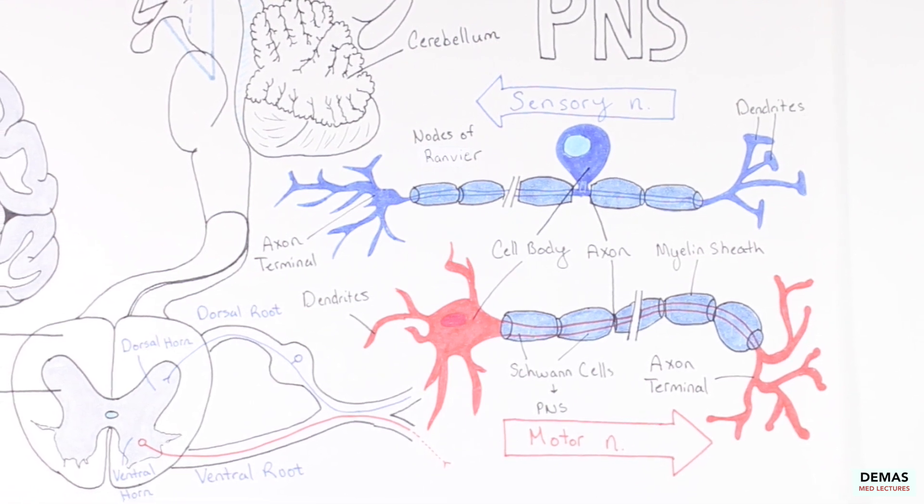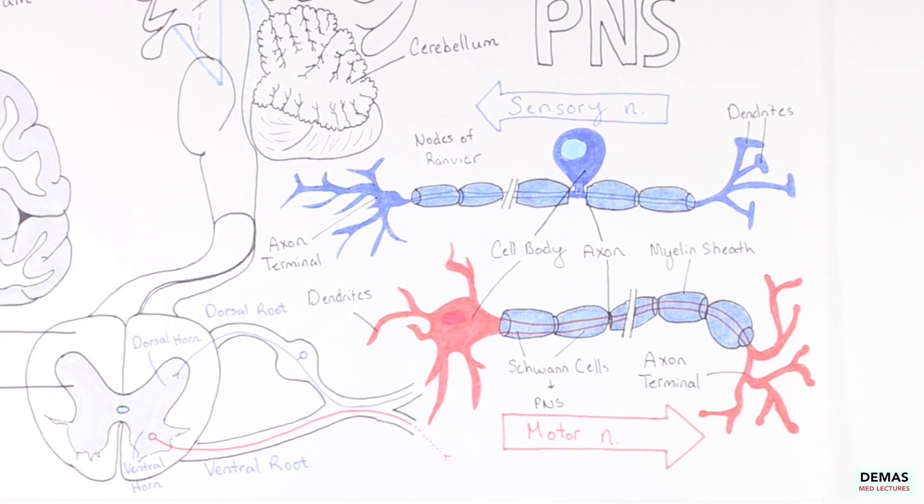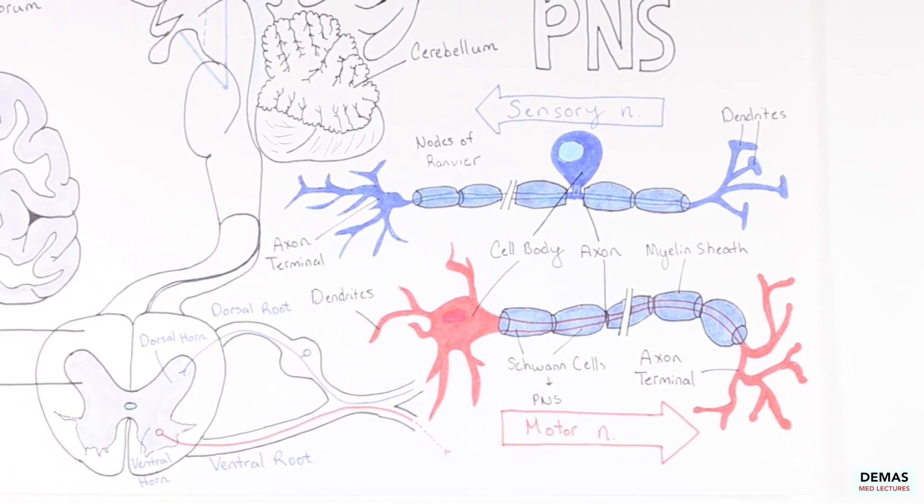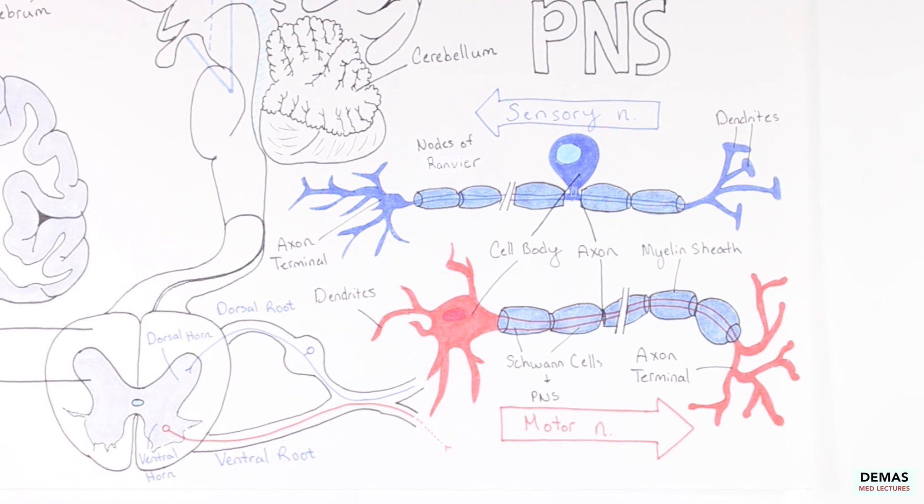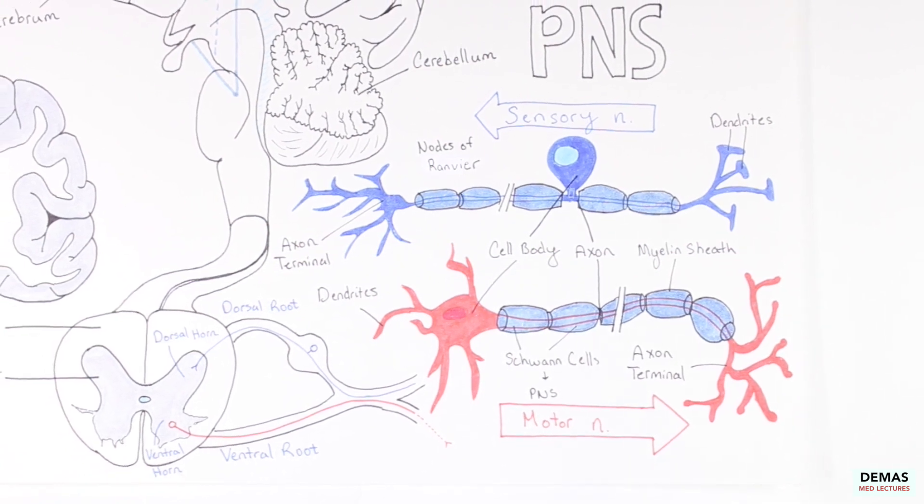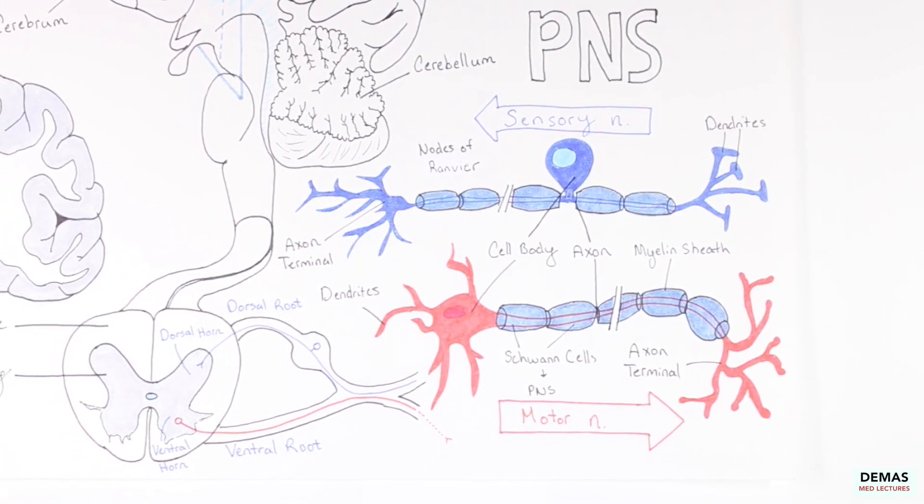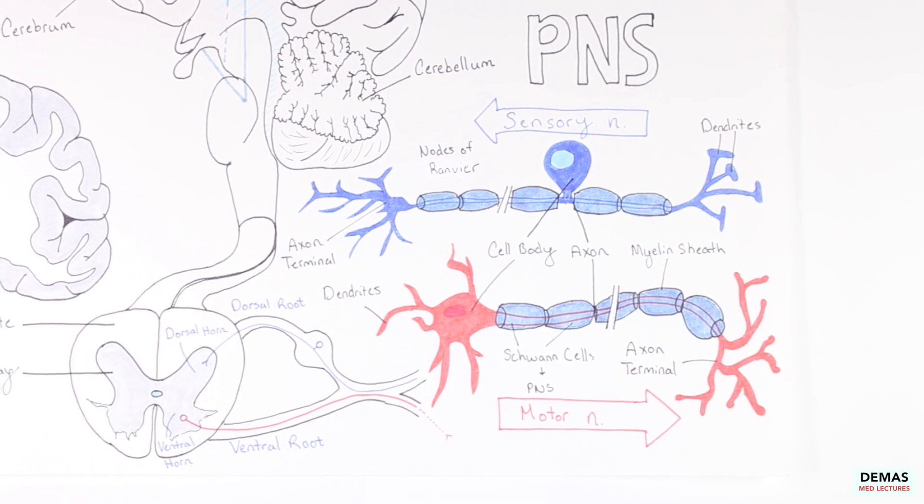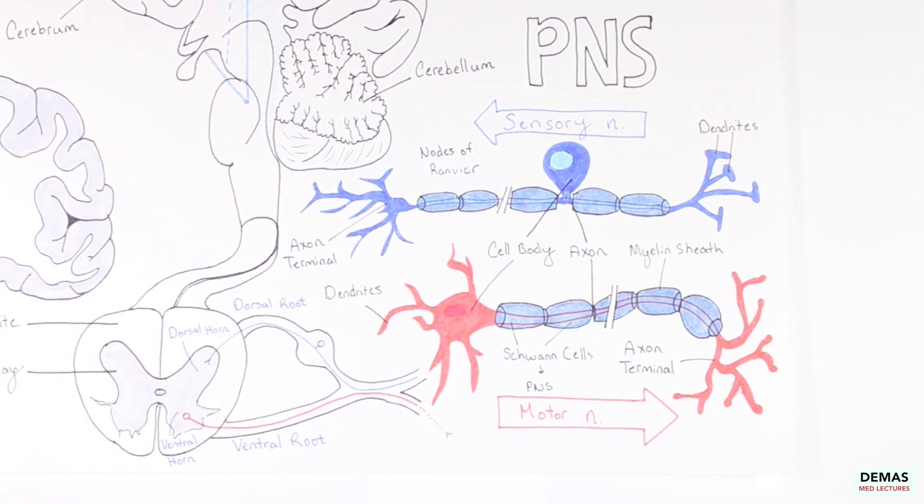For this reason, most of the neurons begin with their dendrites in the gray matter, and the nerve tracts, which contain axons, is what makes the white matter. This is why the inner layer of the spinal cord, the horn, is gray in color and the surrounding spinal cord is white.